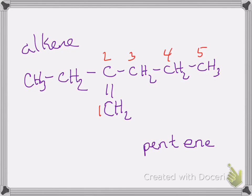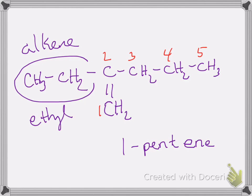I also must indicate where the double bond is located, which is on carbon one. So this is 1-pentene — the '1' tells us where the double bond occurs, between the first and second carbon, but we use the lower number. Now all we have to do is name the substituents. There's only one substituent present — it's an ethyl group on carbon two — so the full name is 2-ethyl-1-pentene.